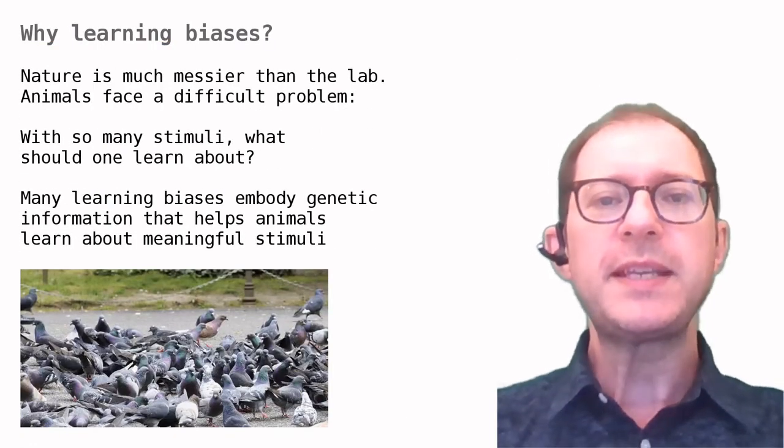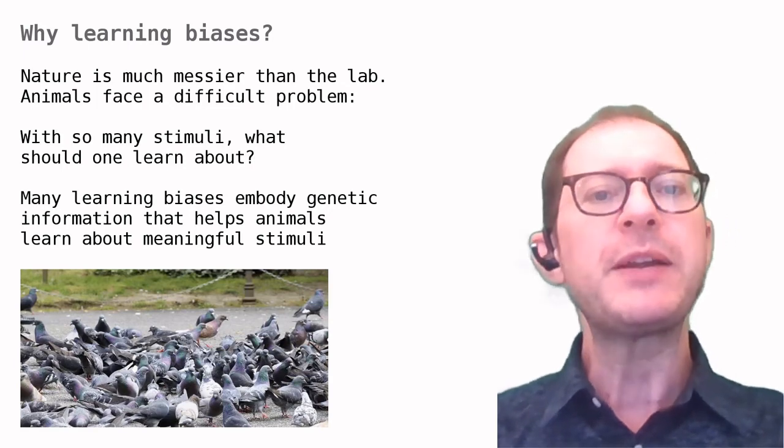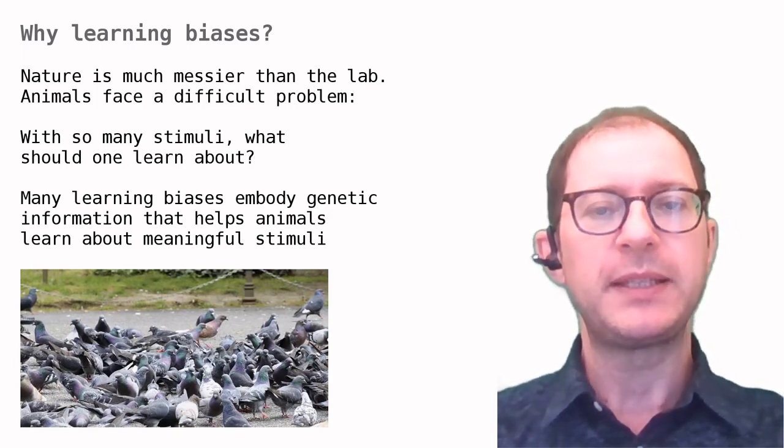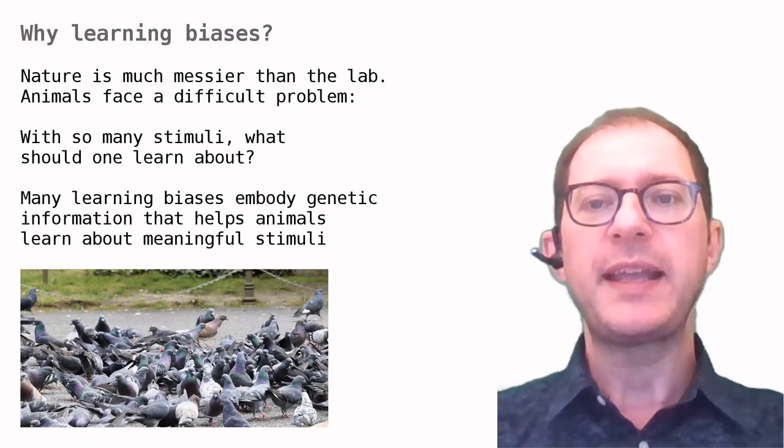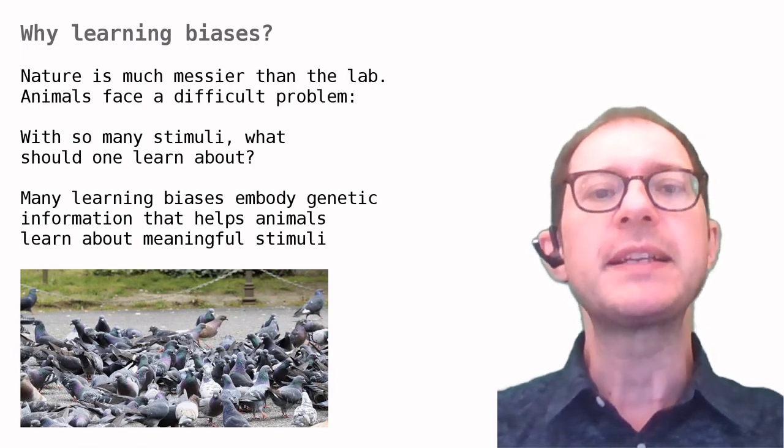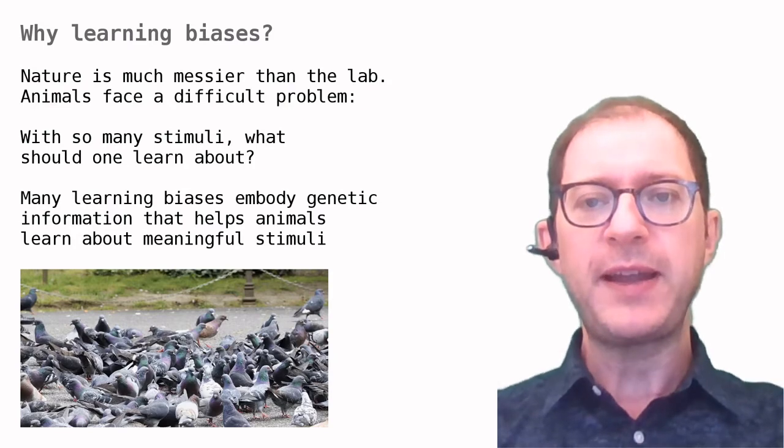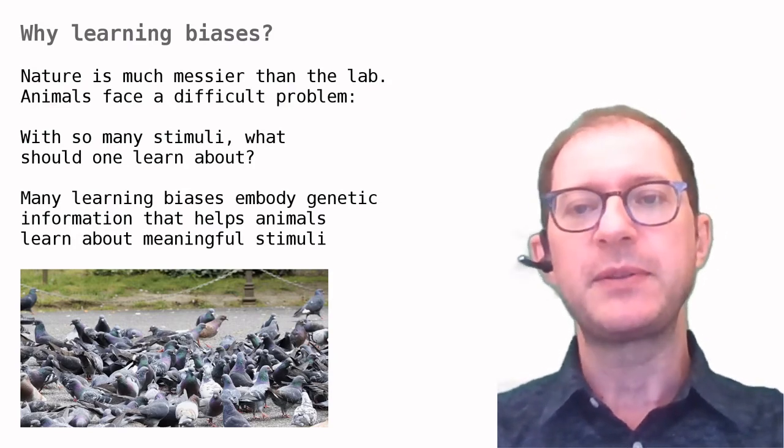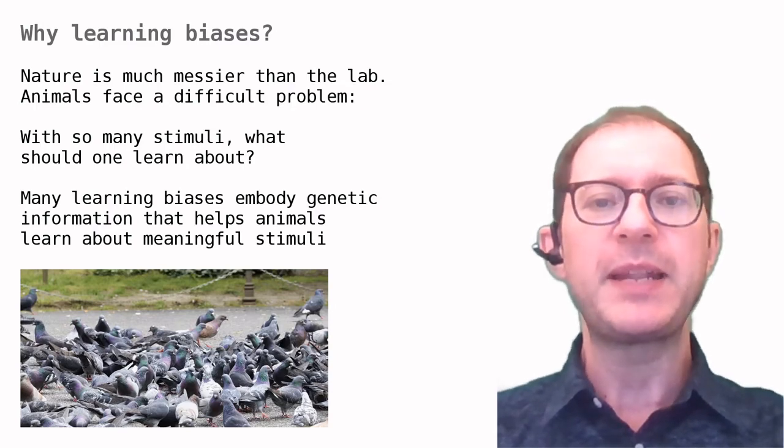We can now see that overshadowing experiments tell us that animals have preferences, which we often call biases, in what to learn about. Let's take a step back and see why these preferences might exist. The natural environment is much messier than the laboratory. There isn't just the light and the sound, but countless stimuli an animal could learn about.